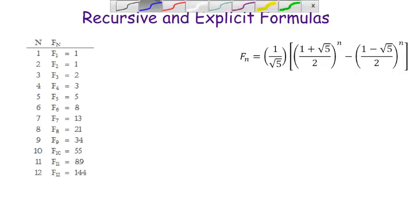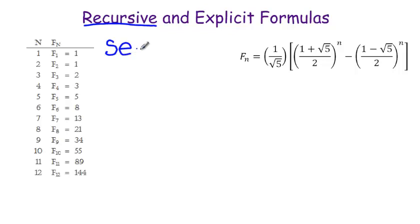The recursive formula, we've already discussed, but let's talk about it a little bit more so we can compare it to the explicit formula. To have a recursive formula for the Fibonacci number, we need two seeds. The seeds are F1 is 1 and F2 is 1.